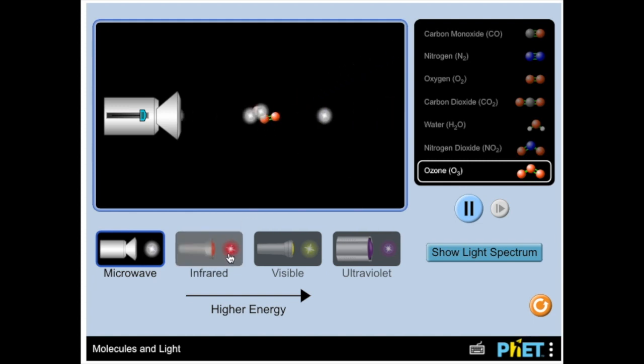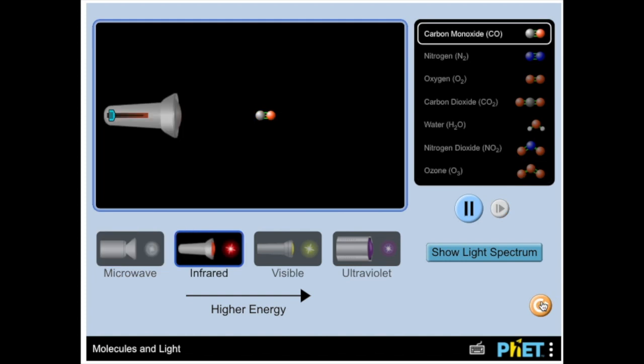I'll go ahead and pause it and refresh it. Now we're starting with infrared on carbon monoxide. Notice how the bond is jiggling, the space in between the two molecules of carbon and oxygen. What you can fill in here is that the bond is stretching. And at the same time, you should hopefully notice some of the infrared wavelengths are being reflected.